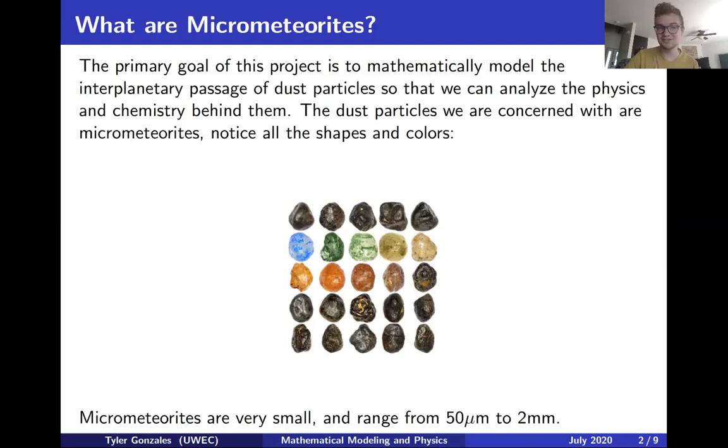They come in many different sizes and shapes. Micrometeorites can look very different depending on how they fell through the earth, how hot they got when they were falling through the atmosphere and things like that. Micrometeorites are very small, ranging from 50 micrometers to two millimeters in size.